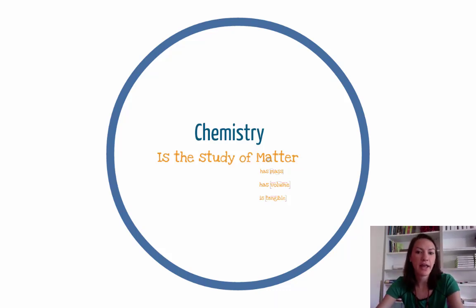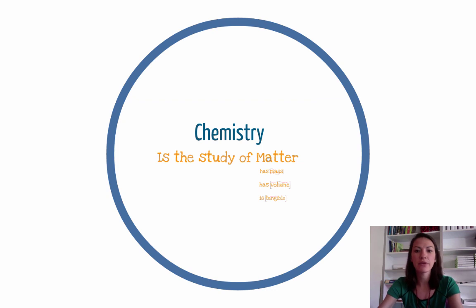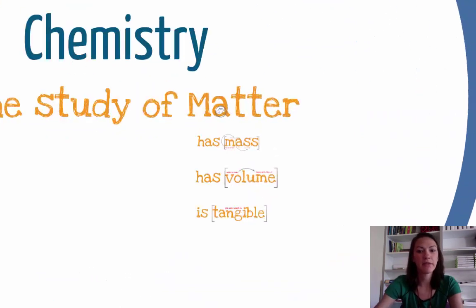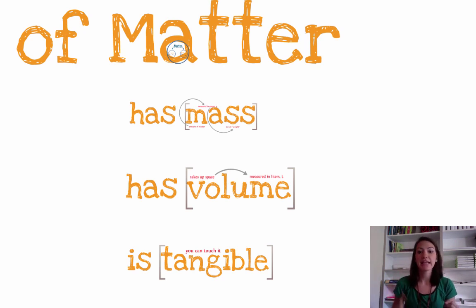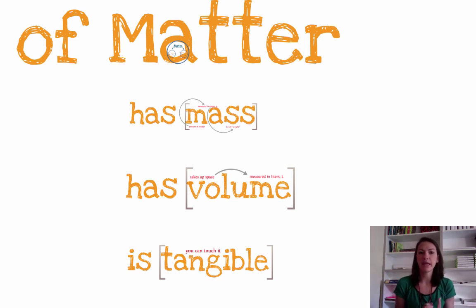Today we're going to be talking about matter. Chemistry is the study of matter, so we need to figure out what is matter, what is not matter, and what are those characteristics that define if something is matter. There are three characteristics that define matter: it has to have mass, it has to have volume, and it has to be tangible. We're going to talk about all of these things so that we can decide whether something is matter or not matter.